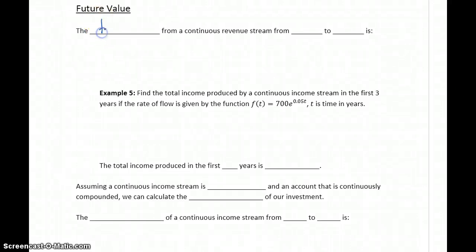The total income from a continuous revenue stream over some time period from t equals a to t equals b can be calculated as the integral from a to b of f of t dt, where f of t represents that continuous revenue stream.